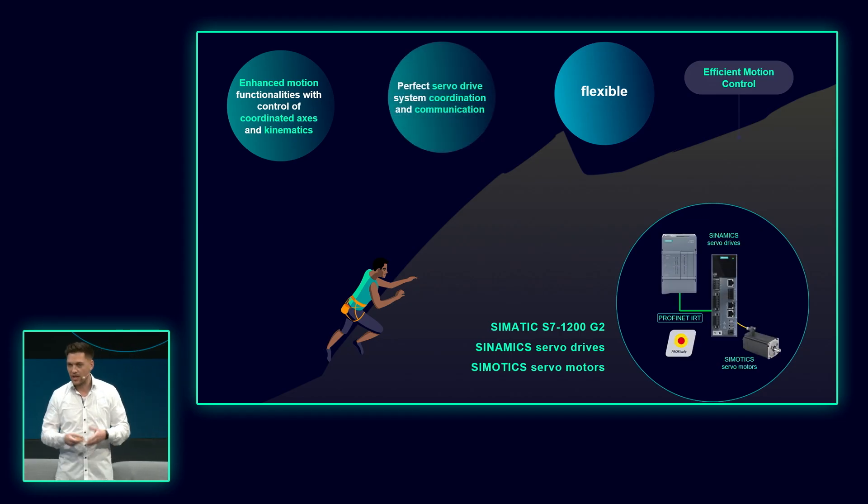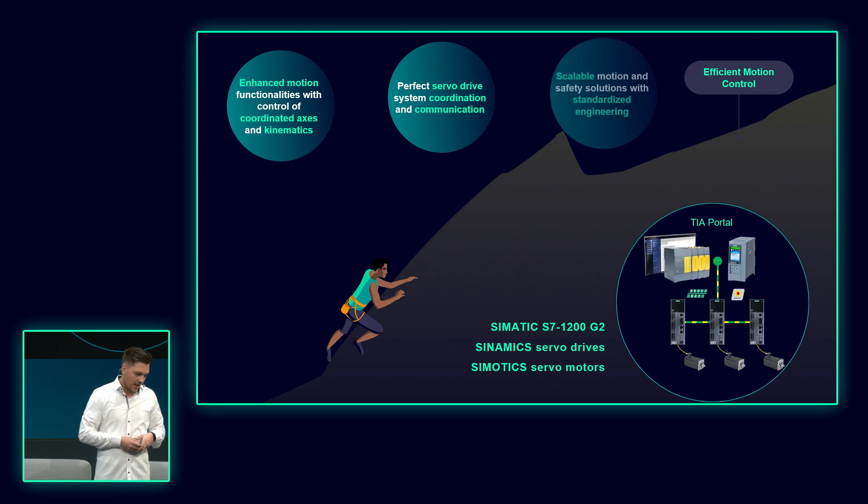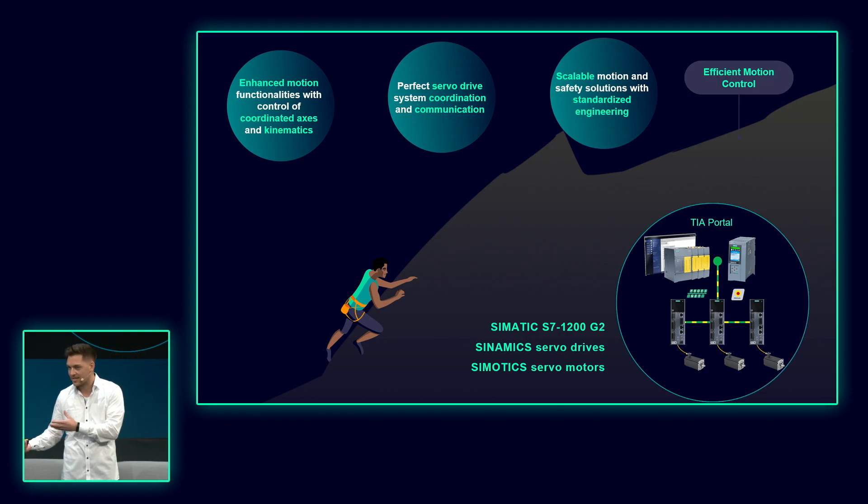How do we achieve dynamics? We have now the perfect servo drive system coordination and communication. This is the perfect handshake between the controller and the drive system with the right communication based on PROFINET IRT - isochronous real-time. That allows for all kinds of dynamic and precise motion applications. And this is flexible. We offer a scalable motion and safety solution with standardized engineering. If you imagine you have a machine with three to four motion axes, that can be controlled typically with the new SIMATIC S7-1200 G2. But if you reach the application limits, you can simply select a higher performance class CPU like the S7-1500 and you're ready to go with the same drive system with the Sinamics drives.